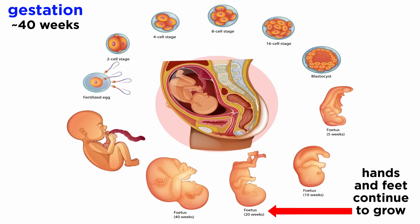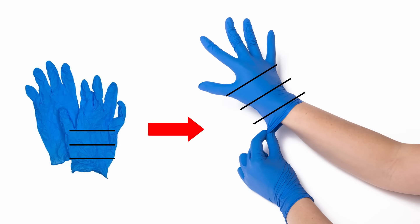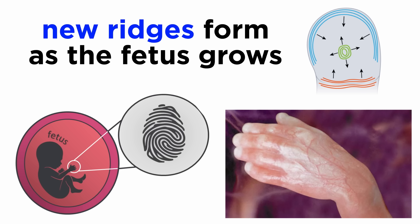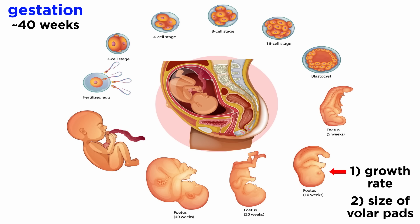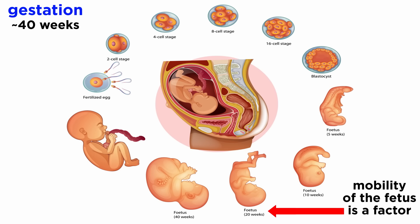The hands and feet continue to grow even after the ridges are formed. Imagine a scenario: draw a few parallel lines on a glove and wear it. The distance between the lines increases as the glove expands when worn, and you would be able to draw another set of lines in the newly formed spaces between the parallel lines. Similarly, the friction-ridge skin will stretch when the hands and feet keep on growing in a fetus. Because of this, the existing ridges will start growing apart. Once the ridges reach a critical distance from each other, new ridges are formed between them to ensure all of the skin is sufficiently ridged. This is why the ridge patterns are unique, as they are influenced by the unique forces acting on a particular region of the hands and feet, along with the growth rate of the fetus, the size of the volar pads, and the mobility of the fetus inside the womb.